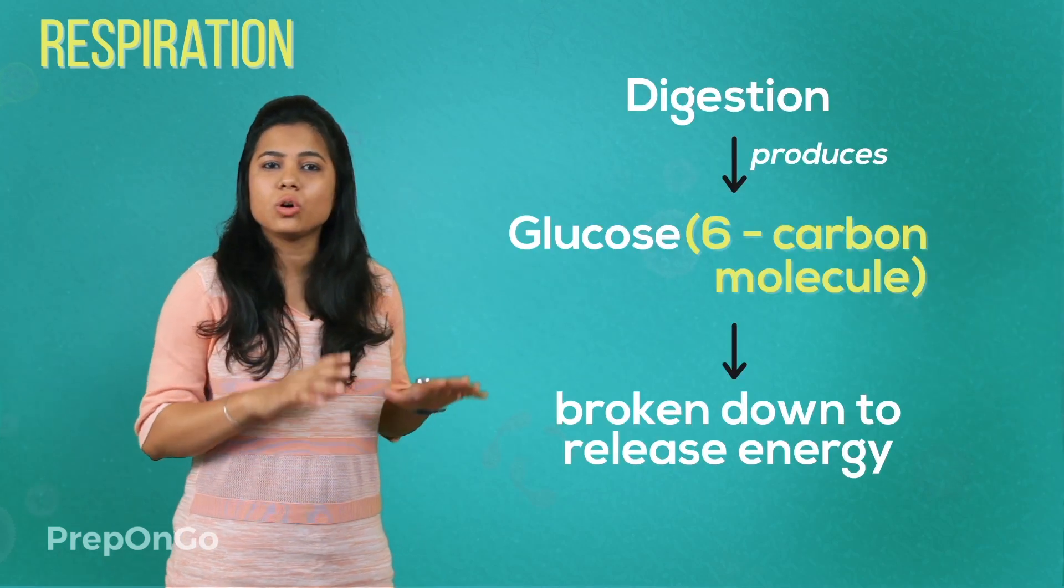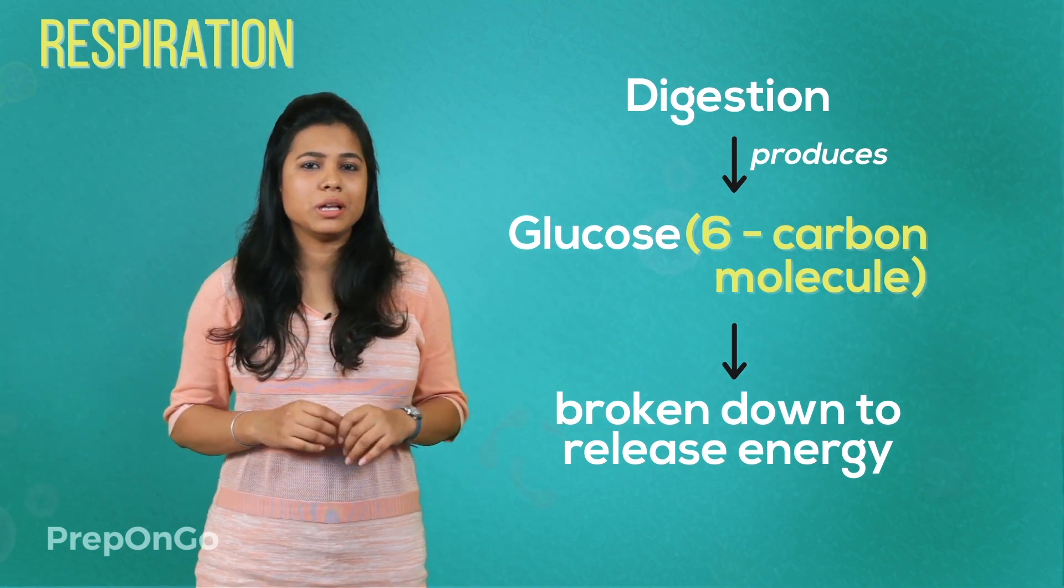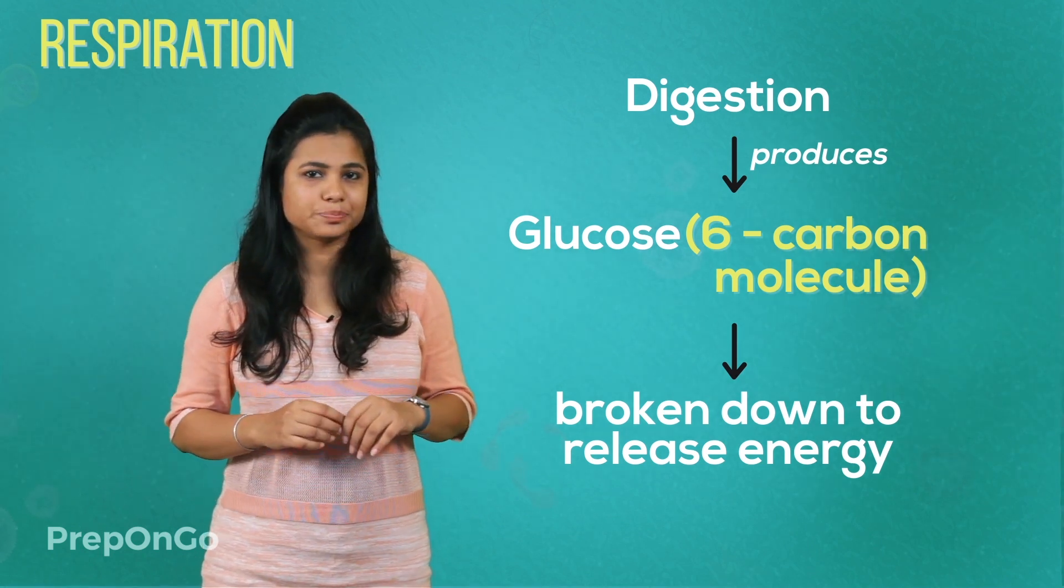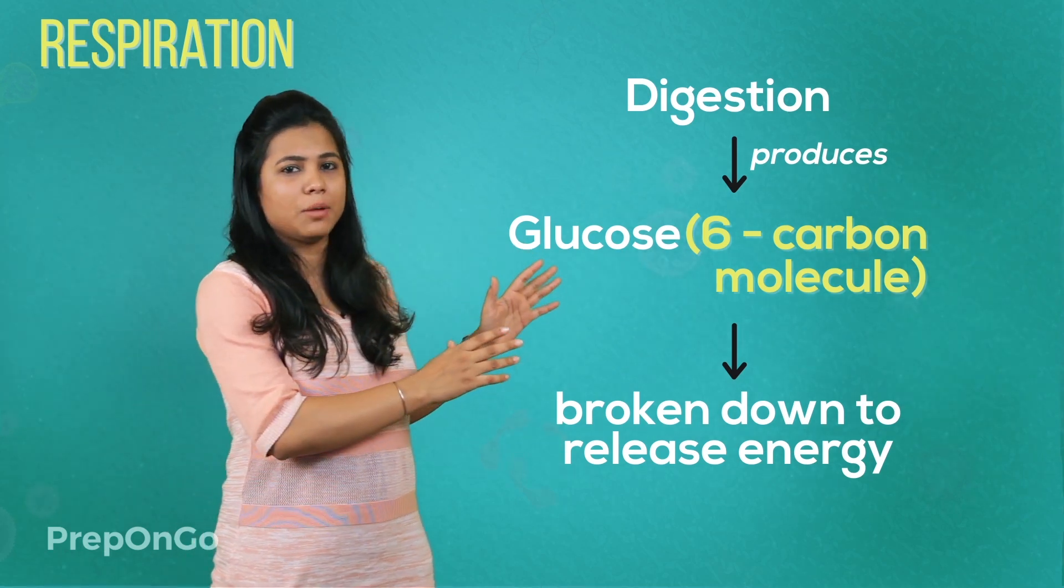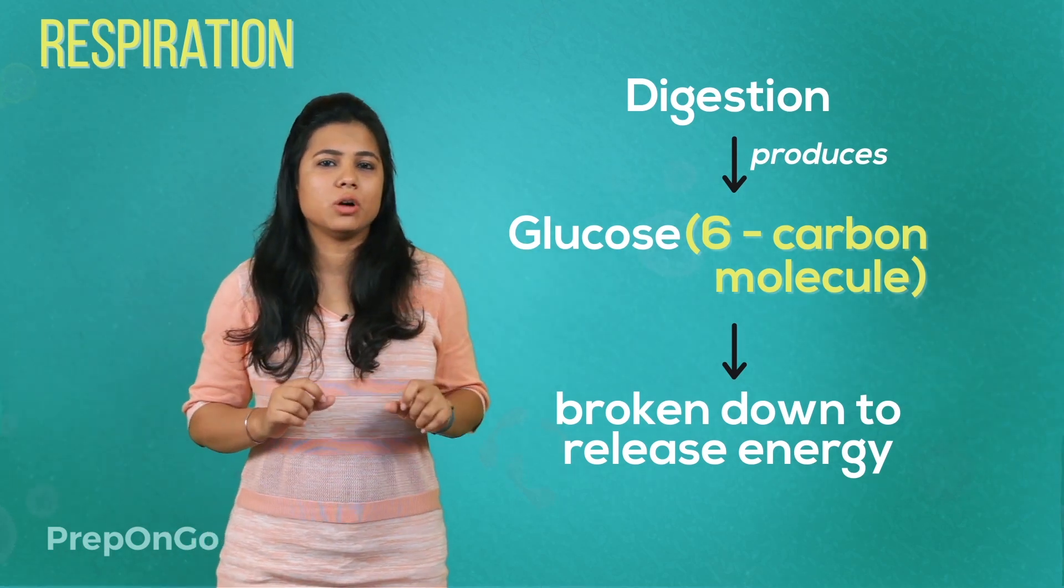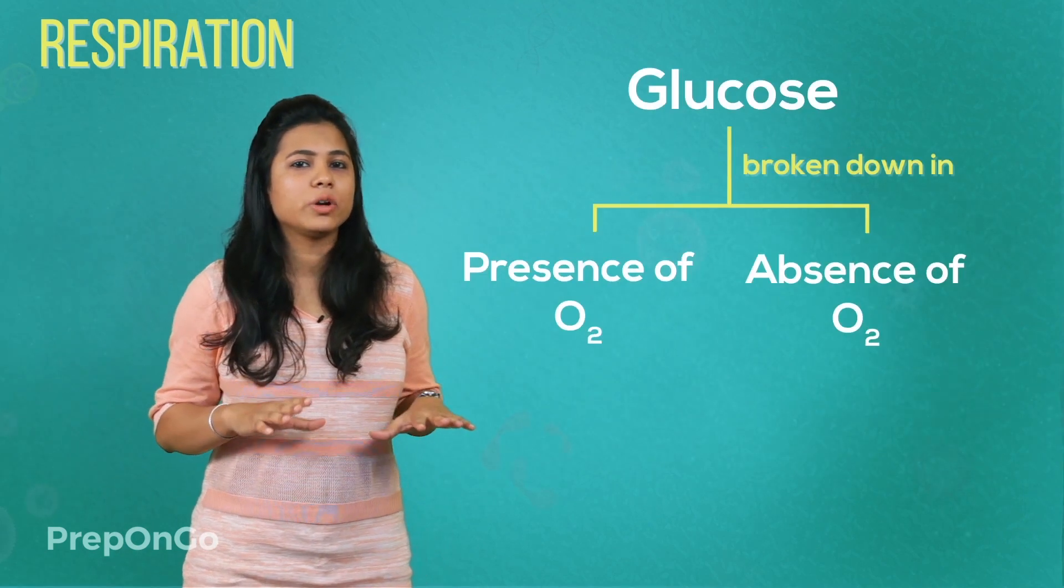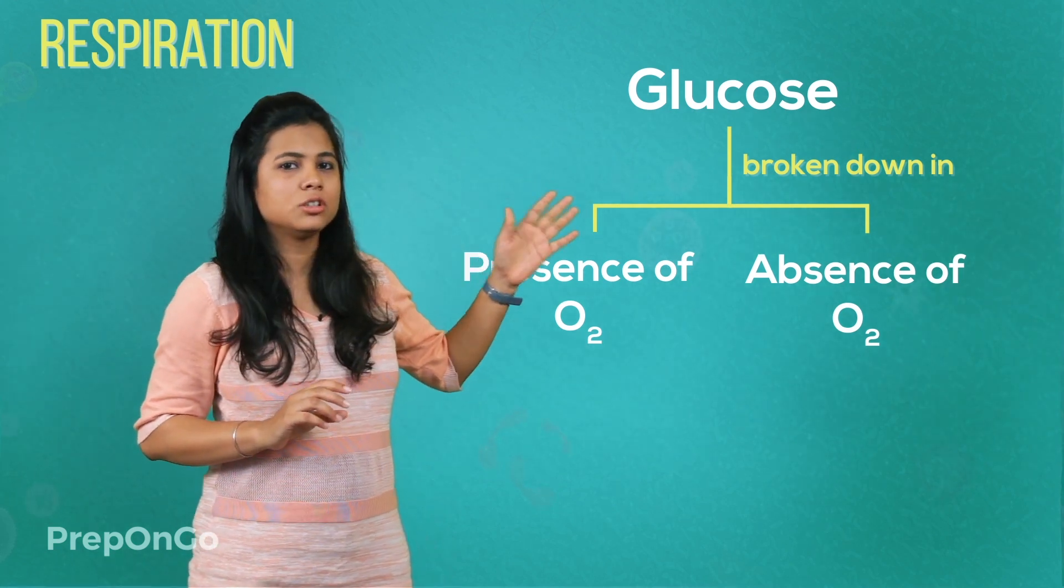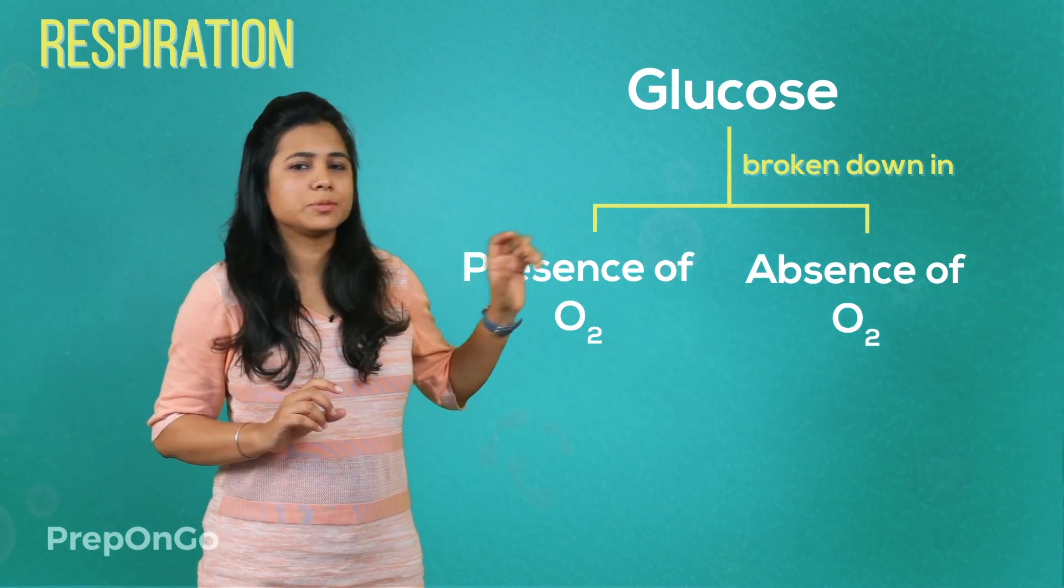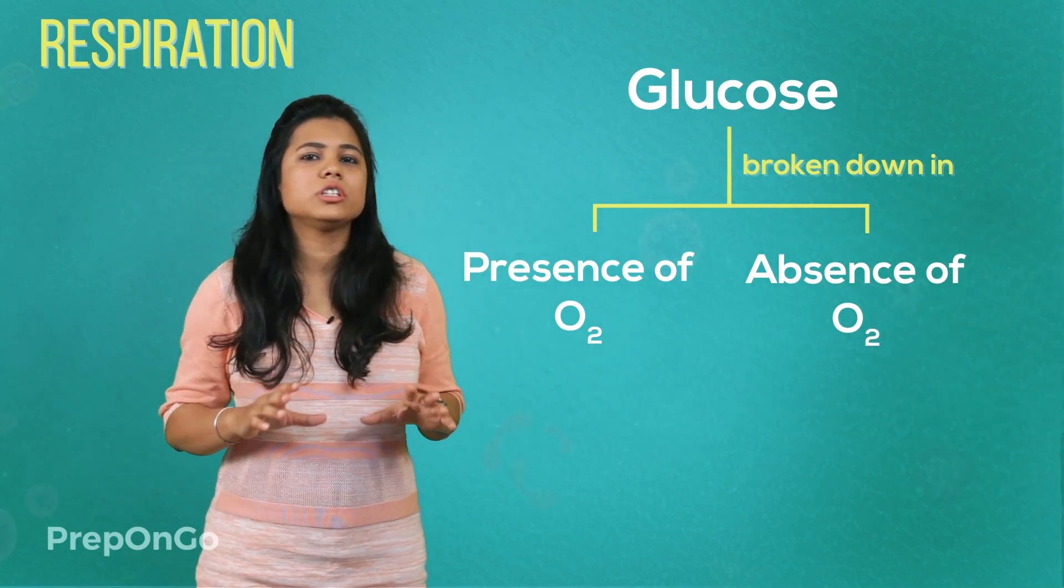Now the glucose which was produced in the digestion process is not consumable in the form which it is released. So this glucose which is a six carbon molecule has to be broken down to release energy. Now this glucose is broken down in two forms: first in the presence of oxygen or in lack or absence of oxygen. So we will see how this process occurs.